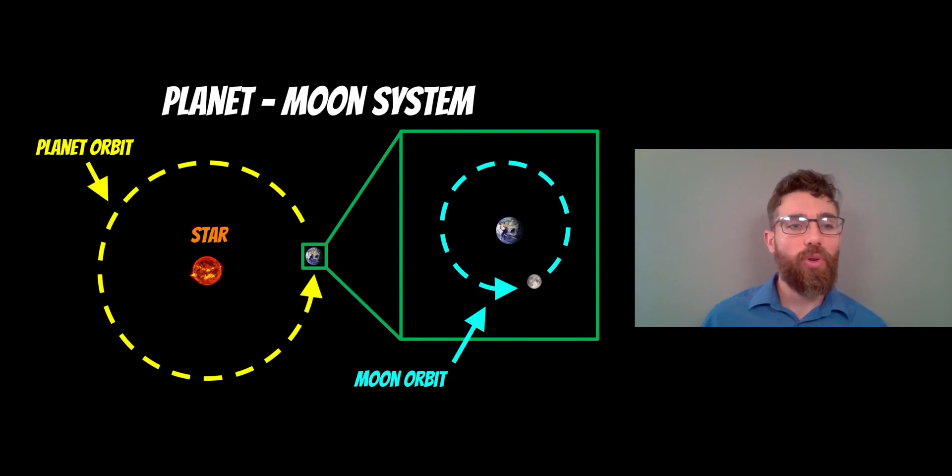First before we do that we'll just recap on the planet-moon system. For a planet-moon system you're going to have a planet which orbits a star or the sun in our case in the solar system, and then a smaller object which orbits that planet. Obviously our own is fairly obvious - we have a moon orbiting us. Most of the planets in our solar system have moons of some kind. The ones closest to the sun not necessarily, but the further away they are, they will have more moons.